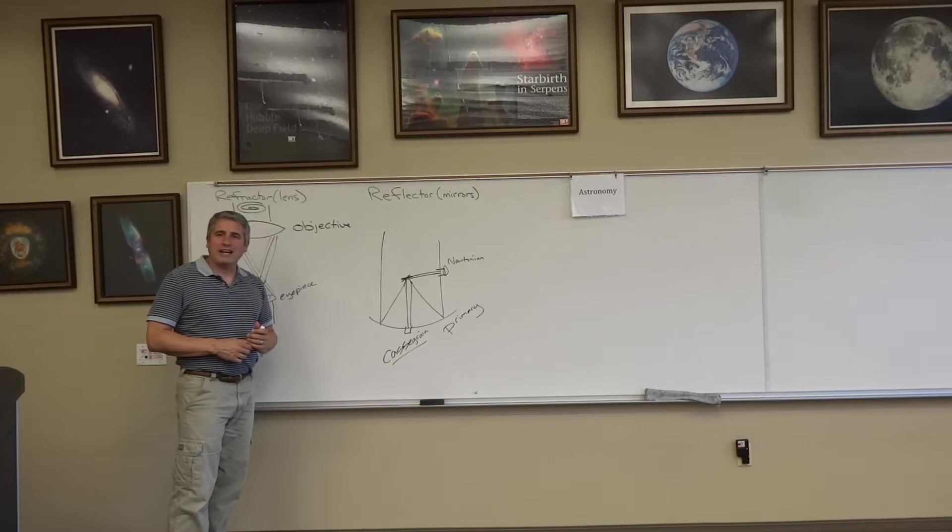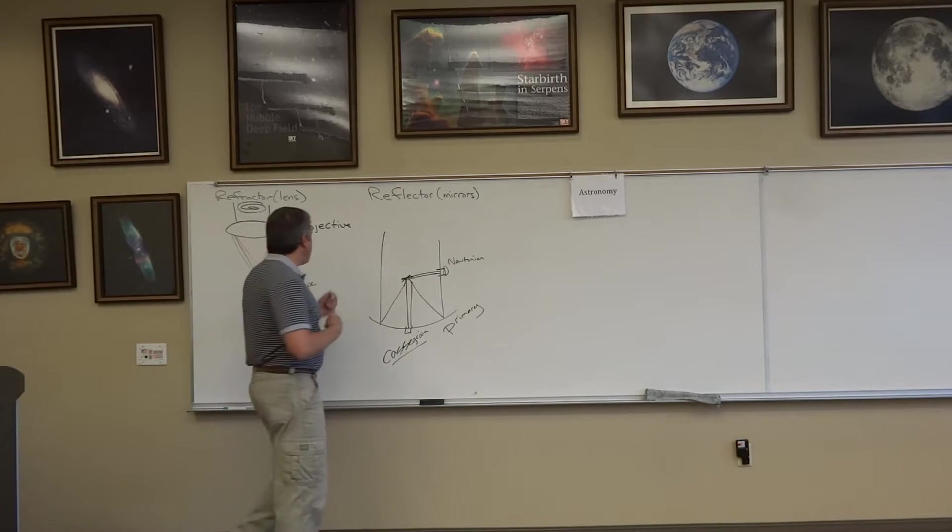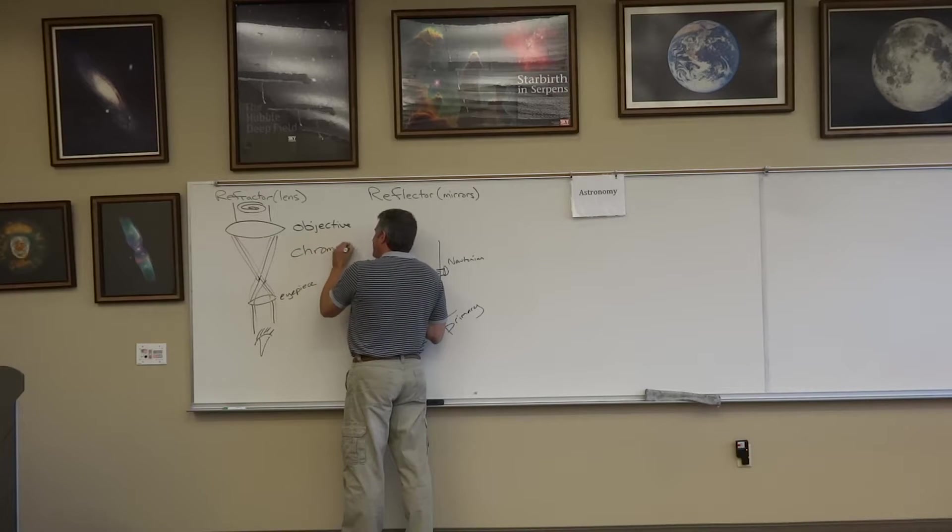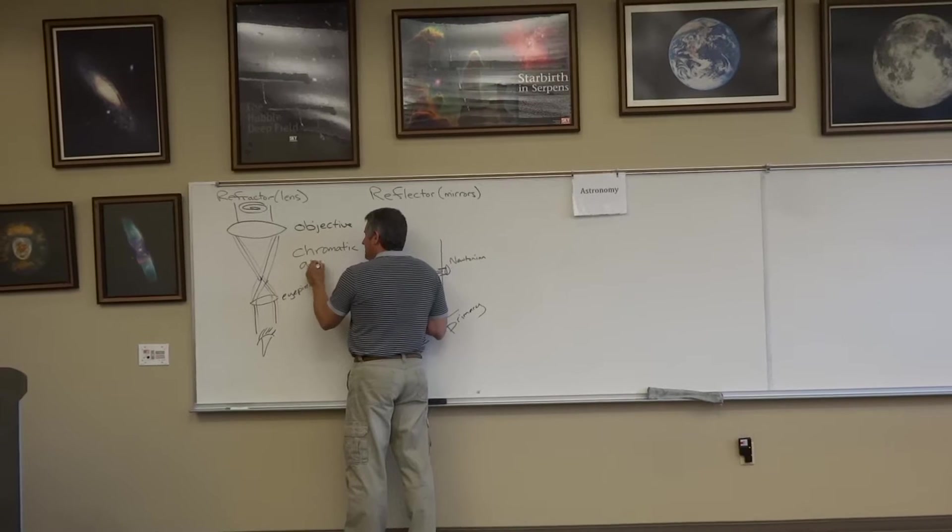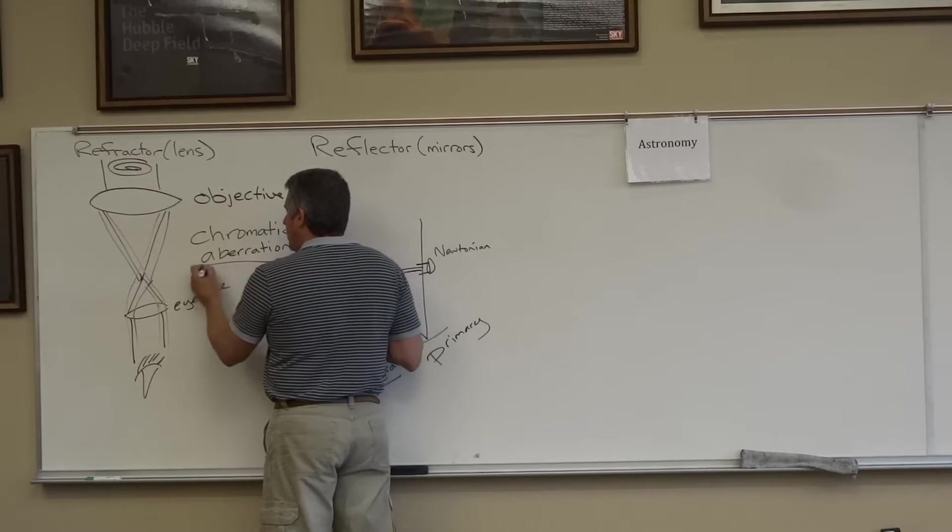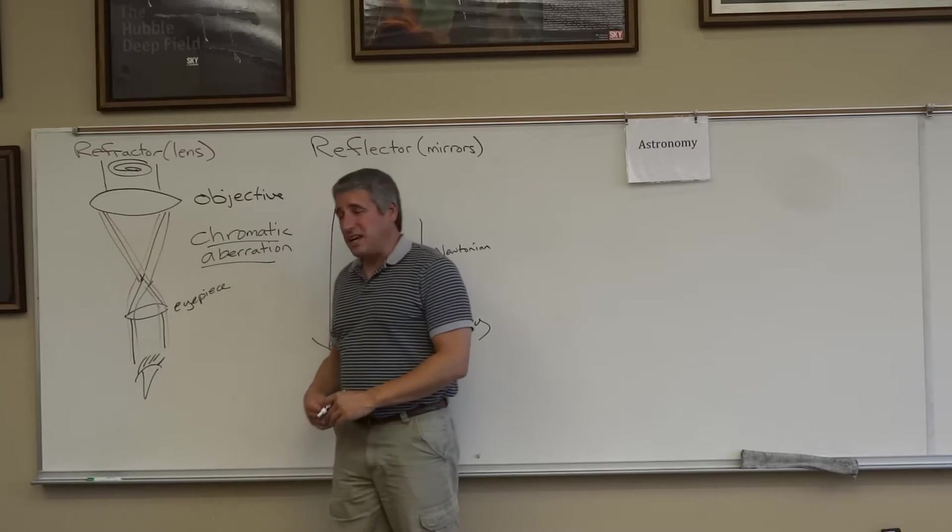In fact, astronomers call that an aberration. The fancy name they use for that is they call it chromatic aberration. It's an aberration, a distortion caused by light itself, caused by the colors, the different colors of light.